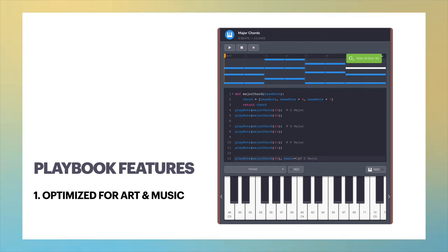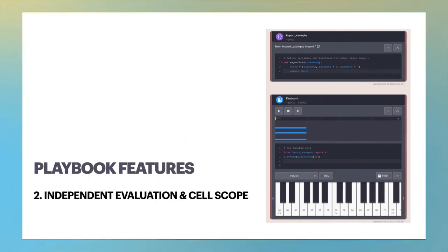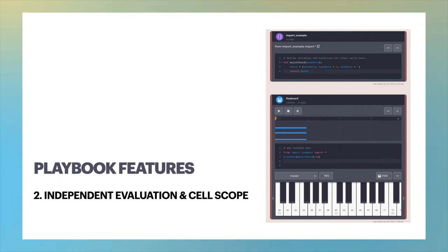Changes to the audio output are queued to begin at the start of the next loop. Playbook cells share a lexical namespace instead of a runtime space. The syntax is the same as standard Python, with the name of each cell becoming the module name used for imports.